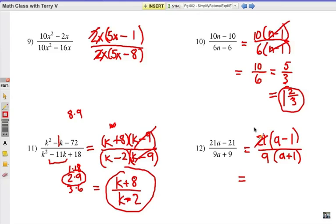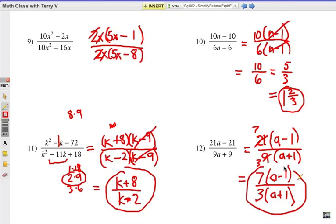But I can divide 3 out of each of those, leaving 7 on top and 3 on bottom. So it's 7 times a minus 1 over 3 times a plus 1. There we go, that's my final answer.